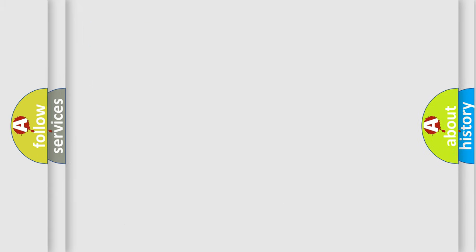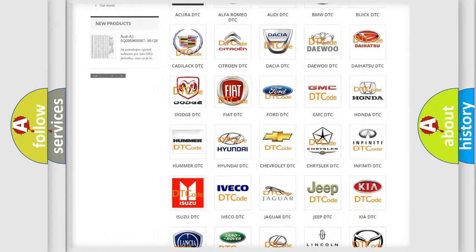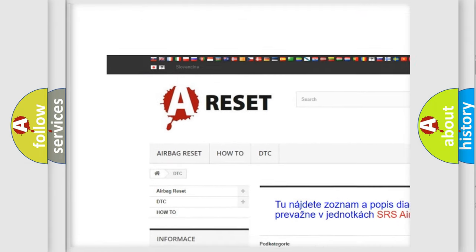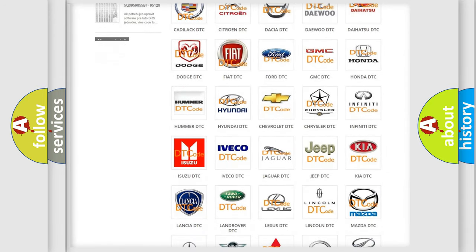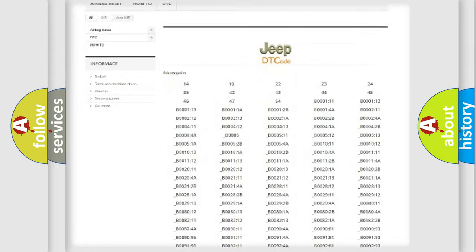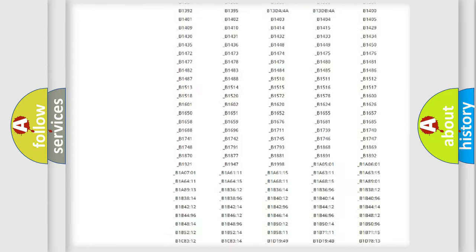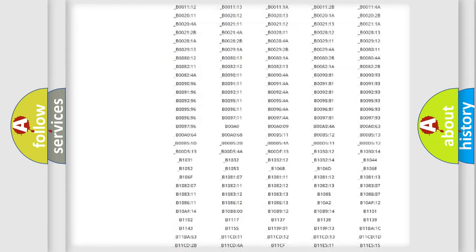Our website airbagreset.sk produces useful videos for you. You do not have to go through the OBD2 protocol anymore to know how to troubleshoot any car breakdown. You will find all the diagnostic codes that can be diagnosed in Jeep vehicles.